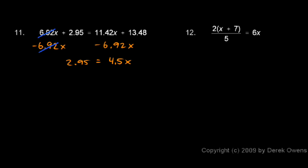Now the reason I subtracted the 6.92x was because that's going to leave me with a positive number there. If I had subtracted the 11.42x, this would have gone away on the right but I would have had a negative number for x on the left, and the positive numbers are just a little bit easier to work with. You could have done it the other way though.